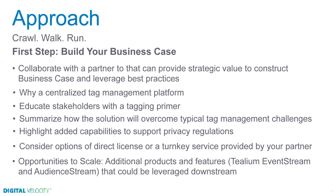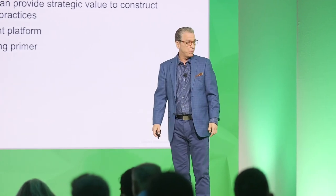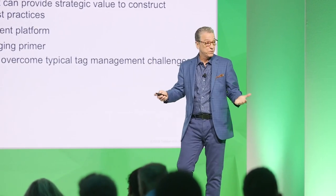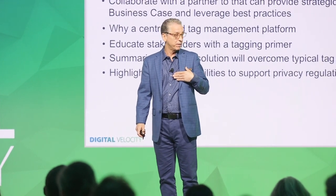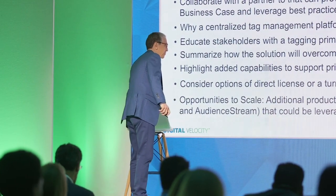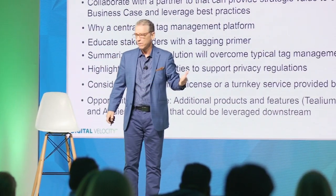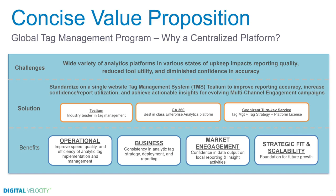The approach was crawl, walk, and run. First steps: build your business case. Collaborate with a partner that can help you provide strategic value and business cases. You have to educate your stakeholders about what a tag management system really is. Create a tagging primer. Summarize how the solution will overcome challenges. Highlight the added capabilities to support privacy regulations — in our business it's very highly regulated. And consider options: you can either direct-license with a platform company or do it through your partner, depending on what you want to do.